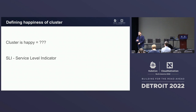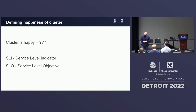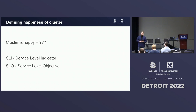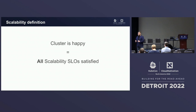To think about cluster happiness, we need to introduce two concepts: SLI (Service Level Indicator) and SLO (Service Level Objective). Think of an SLI as a metric — for example, pod startup latency is X seconds. On top of this metric, you put a threshold. For example, you want the 99th percentile of pod startup latency to be below a specific threshold — in Kubernetes, that would be five seconds. Basically, the cluster is happy when all the scalability SLOs are satisfied.